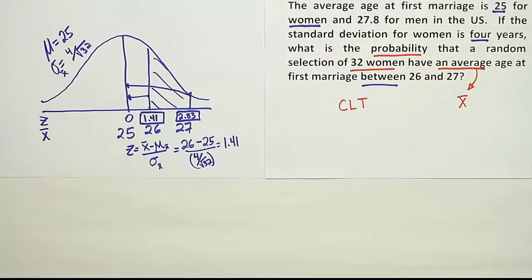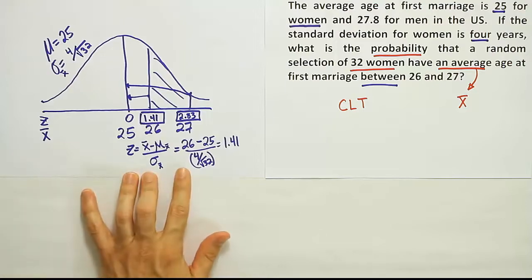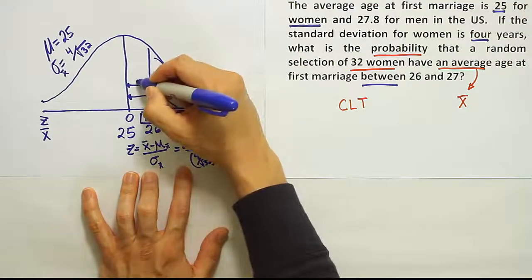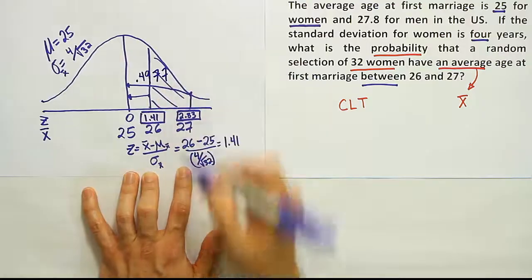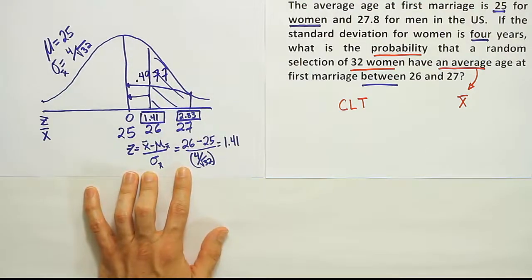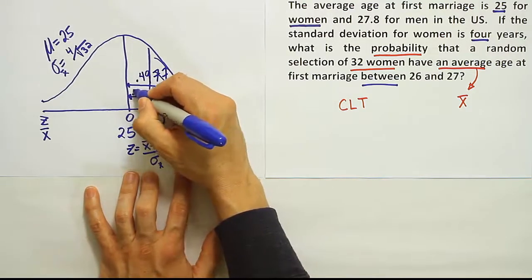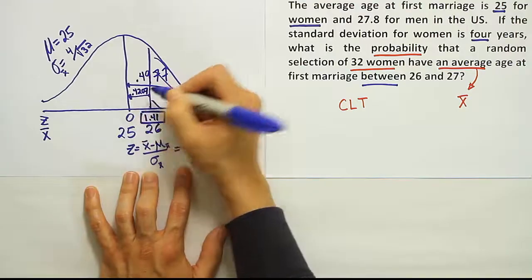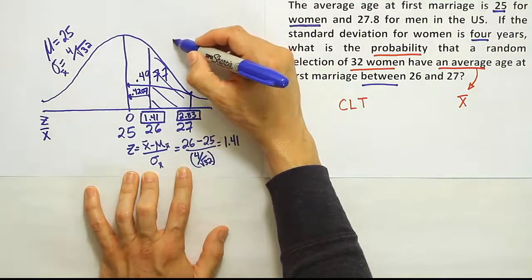Okay, so let's put our two probabilities now on our drawing. The 2.83 gave us .4977, and the smaller of the two, the 1.41, gave us .4207. So in order to get our final answer, we have to subtract those.